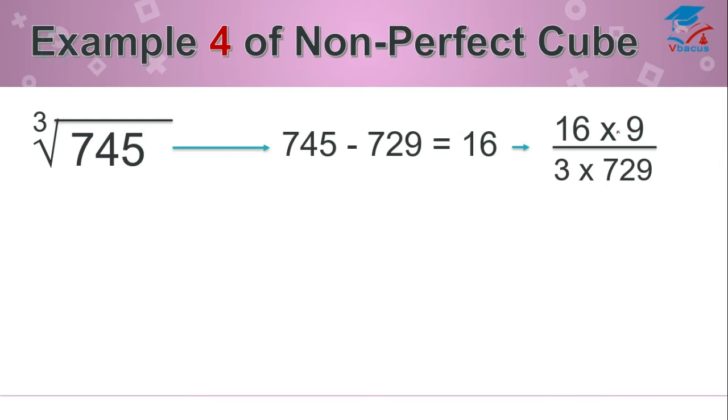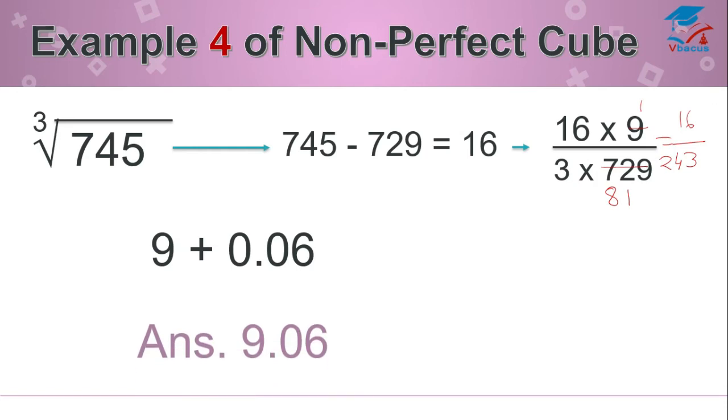Bring it to the lowest term. 9 ones are 9, 9 eights are 72, and 9 ones are 9. So 16 ones are 16. Divide by 3 ones are 3, 3 eights are 24. So 16 should be divided by 243. You will get 0.06. Add it to the 9, and your answer will become 9.06.